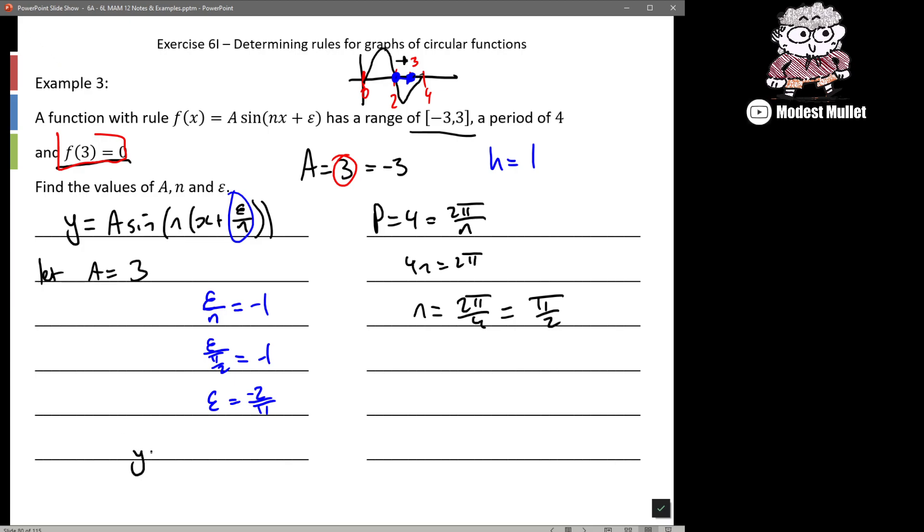So we can finally write our answer as y = 3 sin((π/2)x - 2/π). And that would work.